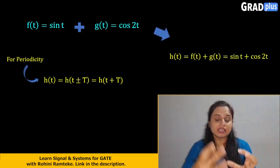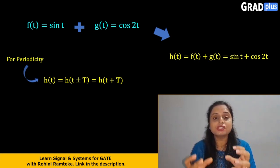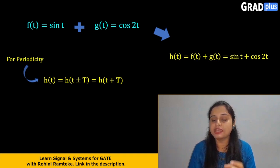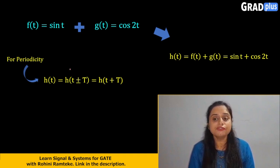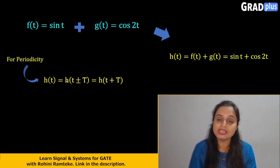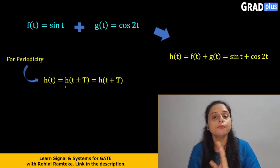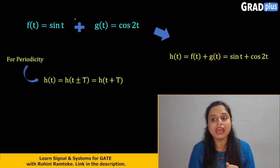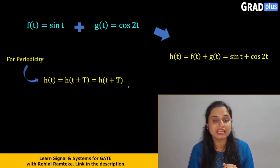For finding whether the signal is periodic or not, some steps we have to follow. First of all, one condition that signal must satisfy: h(t) must equal h(t ± T). If any signal satisfies this condition, that signal will be the periodic signal. If the signal does not follow this condition, it will be a non-periodic signal. Since we are adding these two signals, we have to find h(t) = h(t + T).